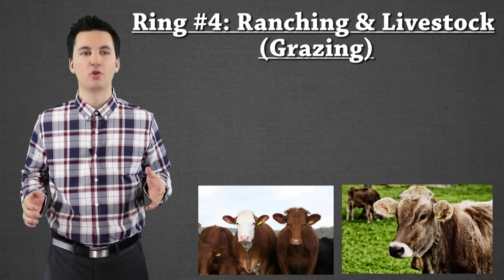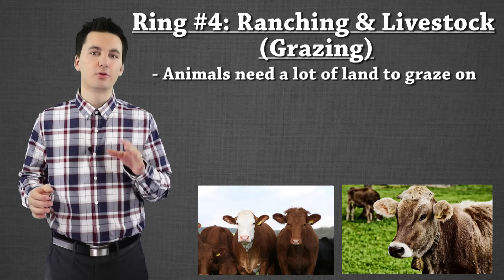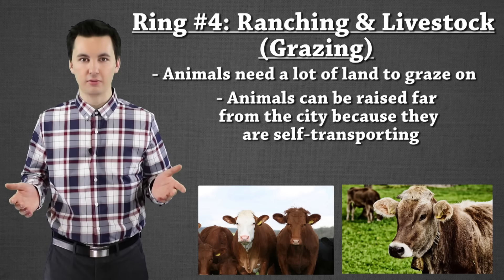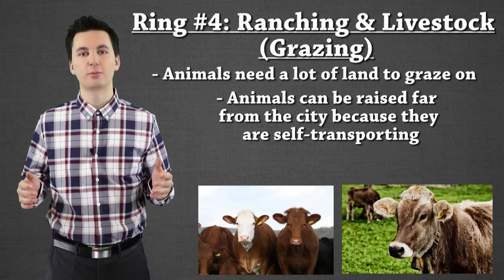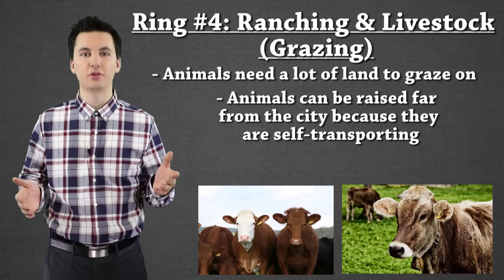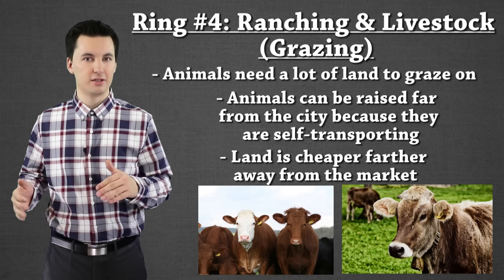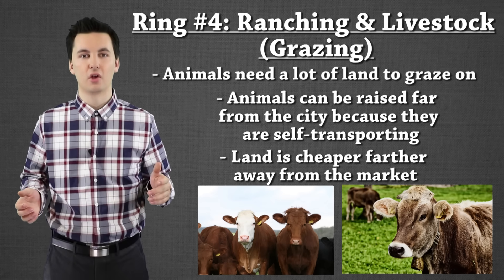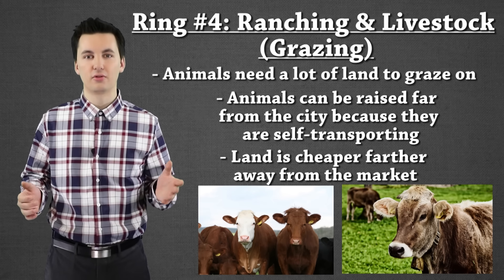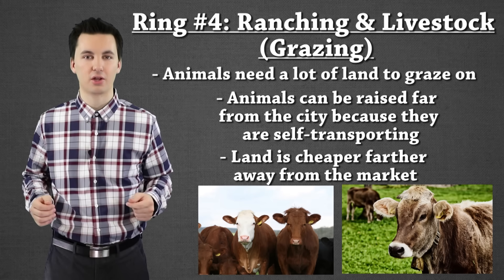The next and final ring is going to be our ranching and livestock — this is where you're going to have grazing occurring. The reason why this is so far away is because the animals themselves can transport themselves; back then, you could just have them walk to the slaughterhouse, so transportation was very cheap. When using free range or letting animals graze, that requires a lot of land, which can be very expensive. This also uses the bid-rent theory — land is very cheap this far out, so you can buy a lot of land and let your animals graze, then have them walk to the slaughterhouse and sell them at the market.